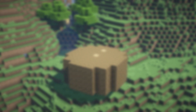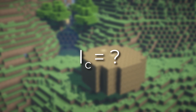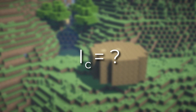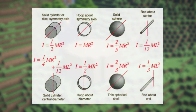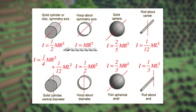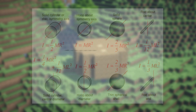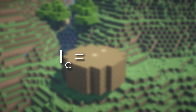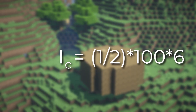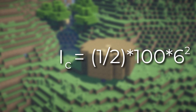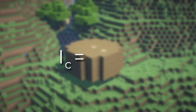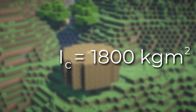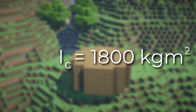So now what is I sub c? Well, if we look at the moment of inertia formula page, we can see that a solid cylinder equals one half m r squared. And since the axis is in the center, it gives us one half times 100 times 6 squared, giving us 1800 kilograms meters squared.